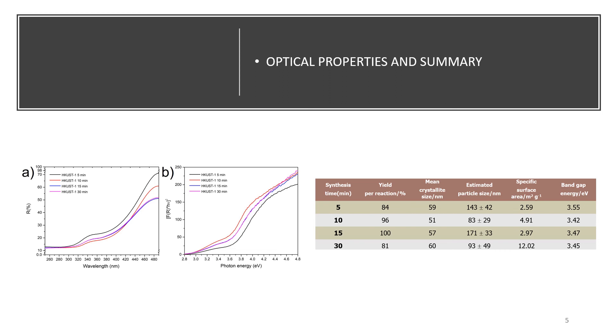Finally, the optoelectronic properties were evaluated by diffuse reflectance spectroscopy analysis, and the estimation of the bandgap energy using the Kubelka-Munk transformation. The bandgap energy values were estimated in a range from 3.42 to 3.55 electron volts, with a slightly red shift in absorption as the synthesis time increases from 5 to 30 minutes. These results were in agreement with the ones obtained by other reports.